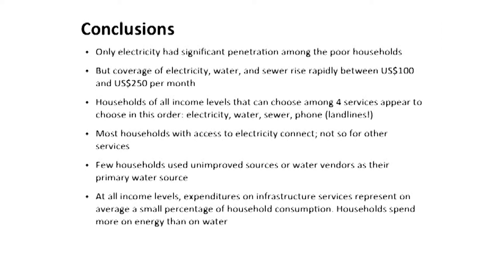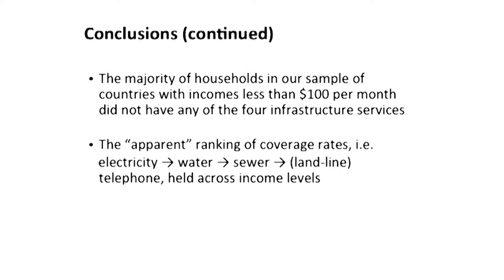Finally, the majority of households in our sample with incomes less than $100 per month do not have any of the four infrastructure services. The ranking of coverage is again: electricity, water, sewer, landline — and this held across all income levels. The lines don't cross. In the next video, we're going to look at some projections of coverage statistics. The JMP and LSMS data shown here are really descriptions of the status quo, so next we'll look ahead and see where coverage is likely to go over the next several decades.